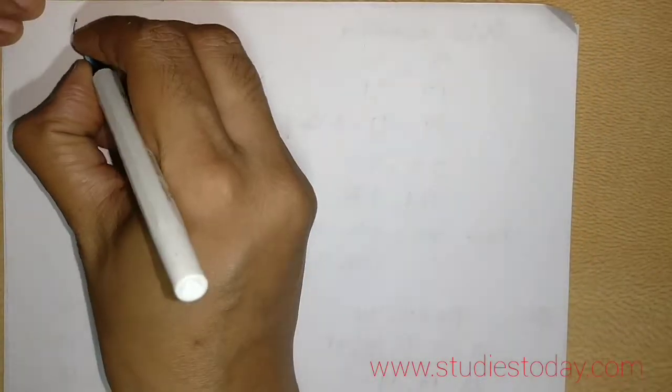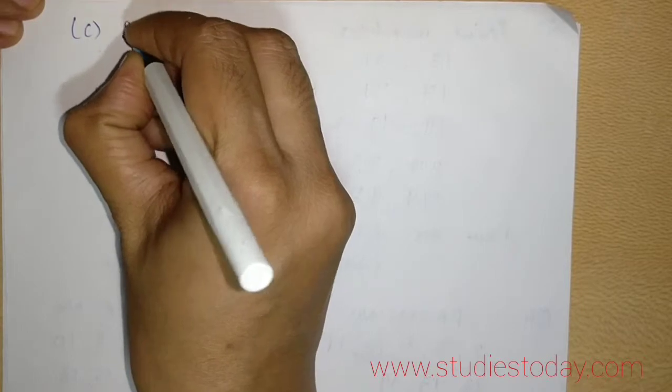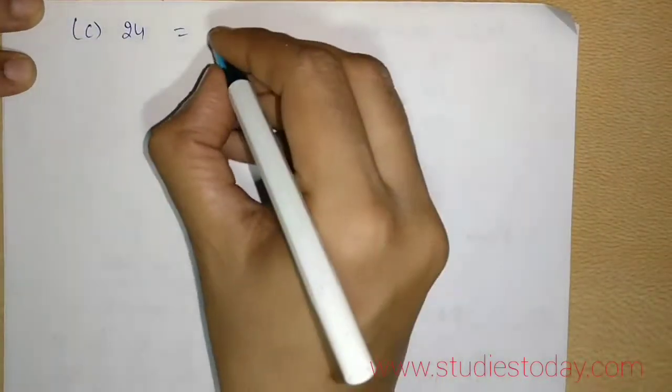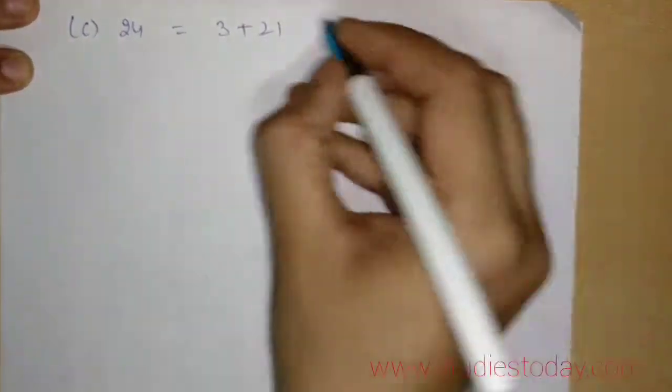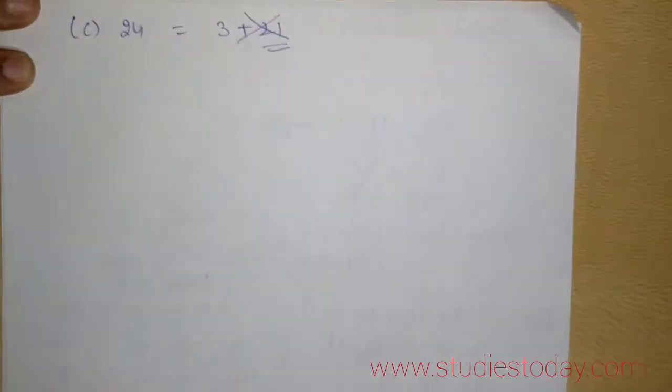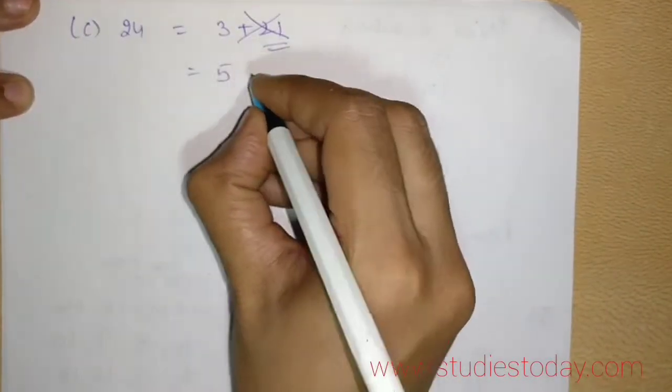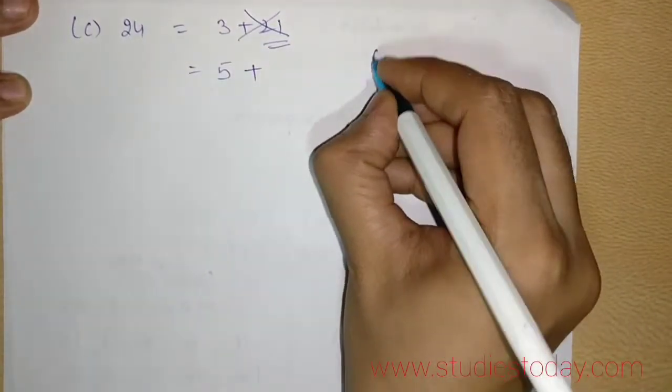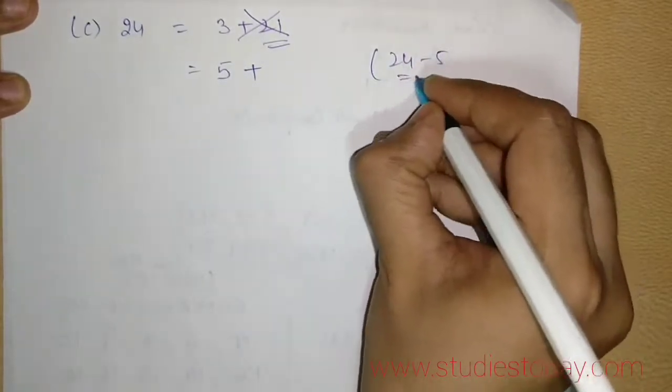Next part is 24. Now children, you try. Can I write 3 plus 21? No, of course not, because 21 is composite. I move on to the next one. 5 plus. How will I find? 24 minus 5, 19.